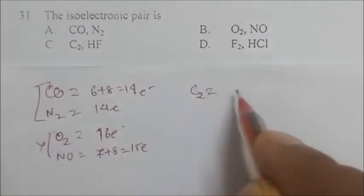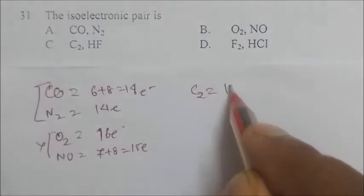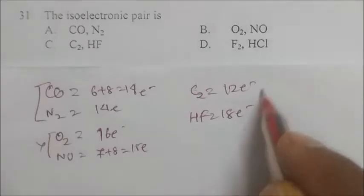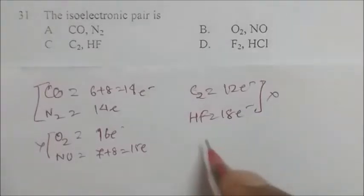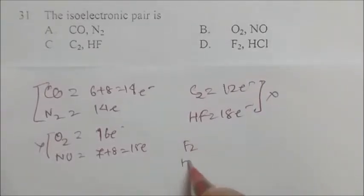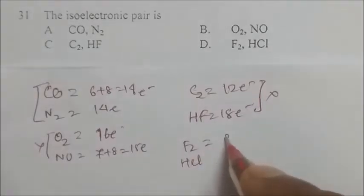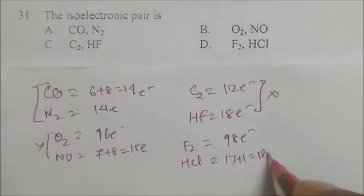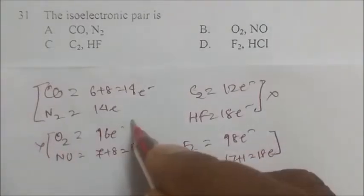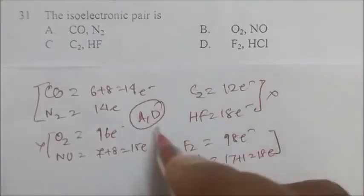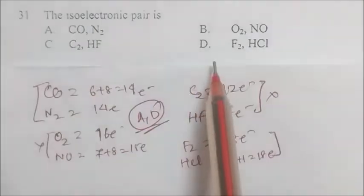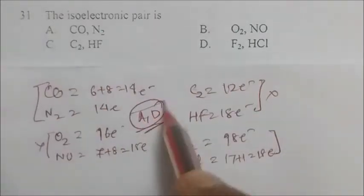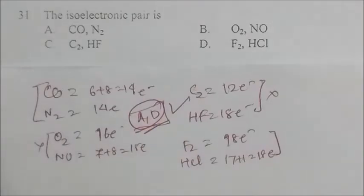For C2, we have 2 × 6 = 12 electrons, and for HF it is 9 + 1 = 10 electrons — not isoelectronic. For F2: 9 × 2 = 18 electrons, and HCl: 17 + 1 = 18 electrons — so F2 and HCl are isoelectronic. Options A and D are both correct answers; this was a doubtful question in KVPY where normally only A is given.